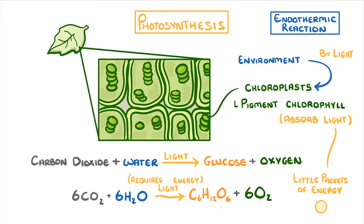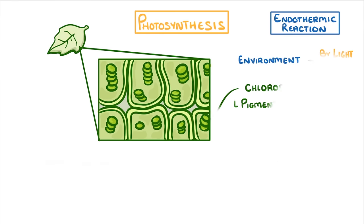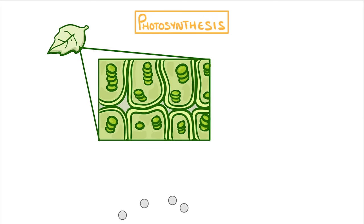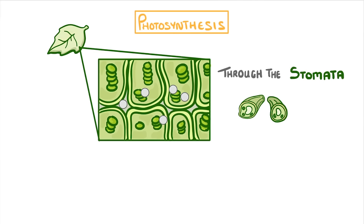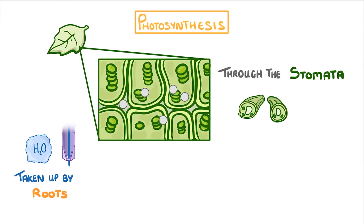We've already looked at where the plant gets these reactants from in our video on the leaf, but to quickly recap: carbon dioxide diffuses into the leaves through the stomata, and water is taken up from the soil by the roots and then transported to the leaves via the xylem.